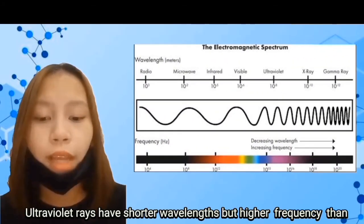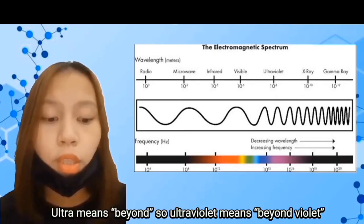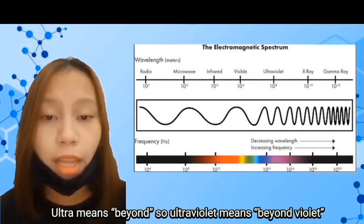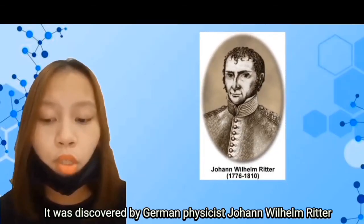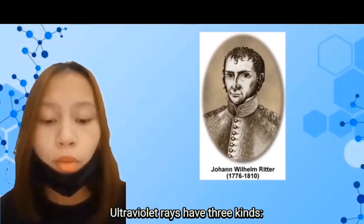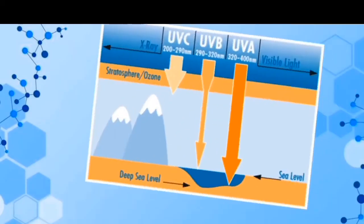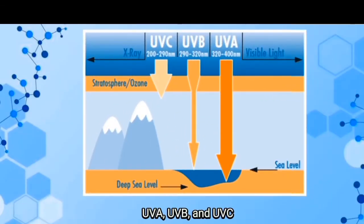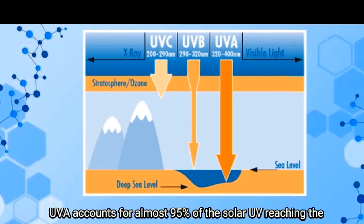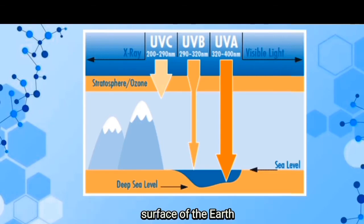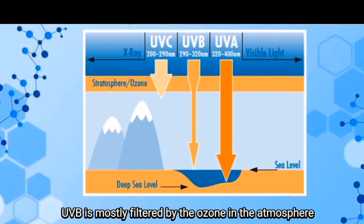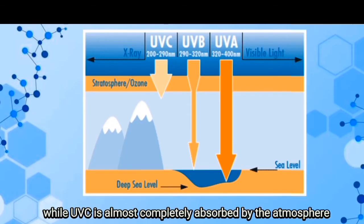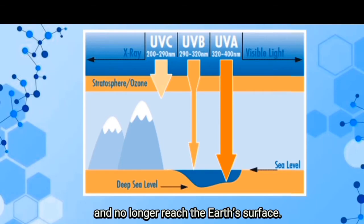Ultraviolet rays have shorter wavelengths but higher frequency than visible light. 'Ultra' means beyond, so ultraviolet means beyond violet. It was discovered by German physicist Johann Wilhelm Ritter. Ultraviolet rays have three kinds: UVA, UVB, and UVC. UVA accounts for almost 94% of the solar UV reaching the surface of the Earth. UVB is mostly filtered by the ozone in the atmosphere, while UVC is almost completely absorbed by the atmosphere and no longer reaches the Earth's surface.